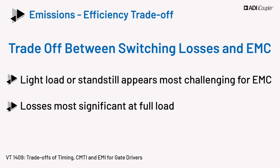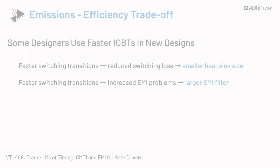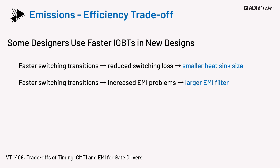A light load appears most challenging for emissions, while switching losses are most significant at full load. Some designers looking to use faster switches in new designs need to consider that faster switching transitions will lead to reduced switching loss, and thus a smaller heat sink is required. However, this also leads to increased EMI problems, and the system will require a larger EMI filter to keep the radiated emissions within limits. Thus, the design trade-off.